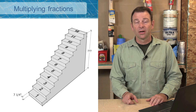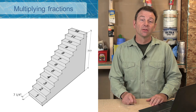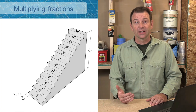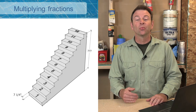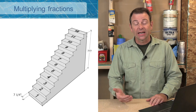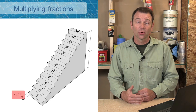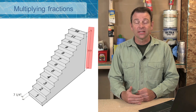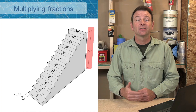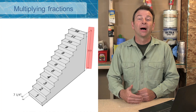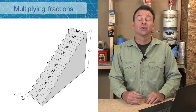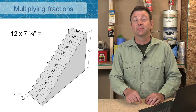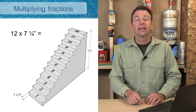Let's solve a similar problem — this time we're going to look at an illustration. What you see here is a staircase with 12 stairs. Each stair is equal at seven and a quarter inches each. The question is: what is the total height of the staircase? We multiply the number of stairs by the height for each stair — so we set this up as 12 times 7 and a quarter.